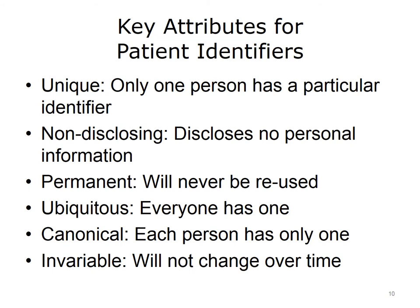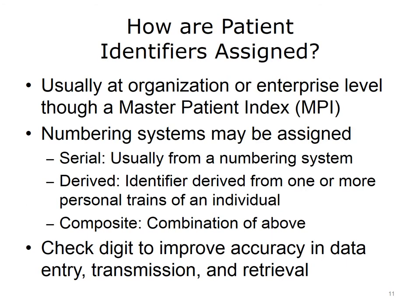In addition, the identifier should be canonical, so not only should each person have a unique identifier, but each person should have only one and not multiples. Finally, the identifier should be invariable — in other words, it should not change over time. How are patient identifiers assigned in healthcare?